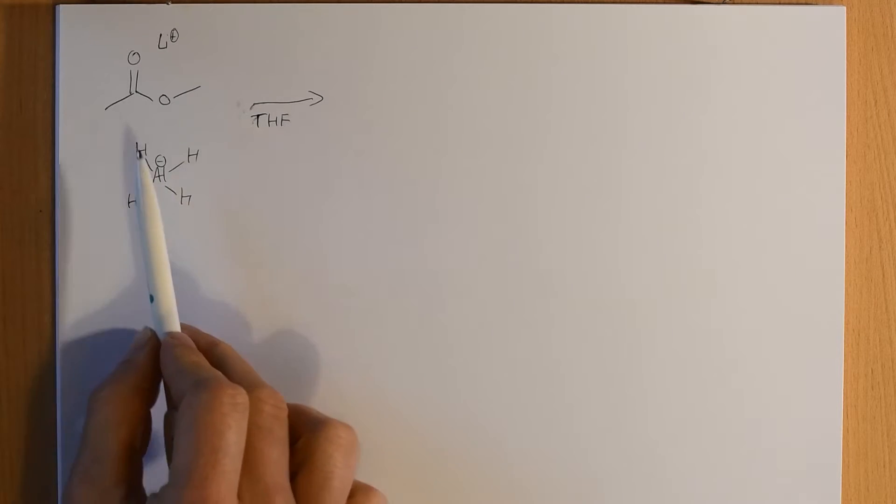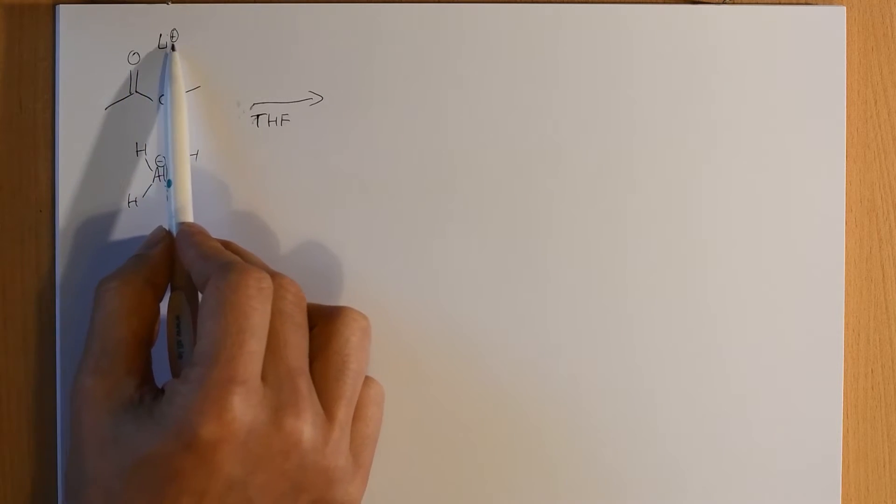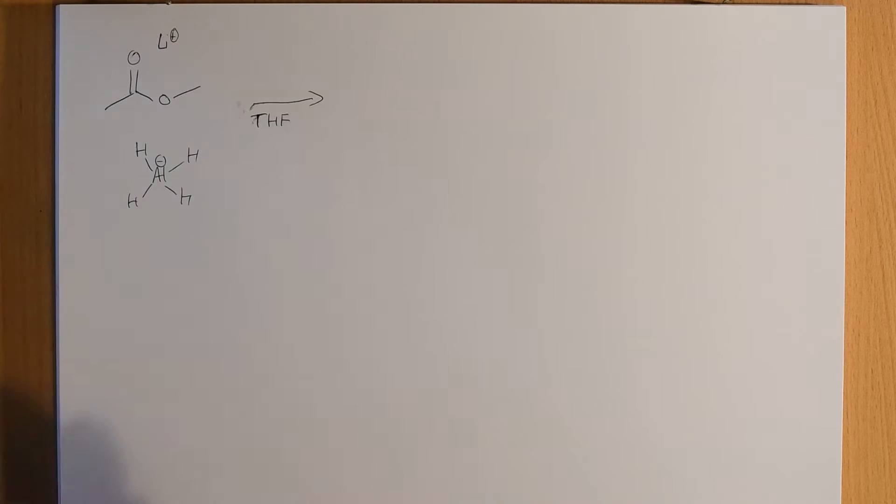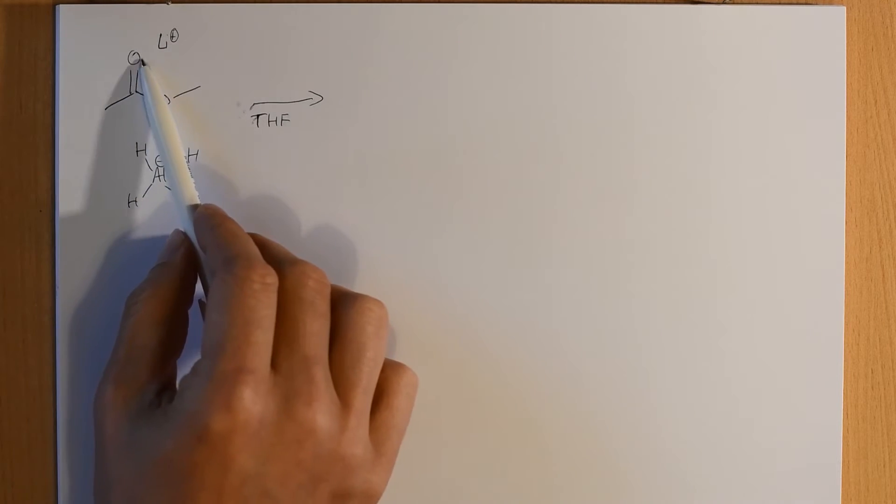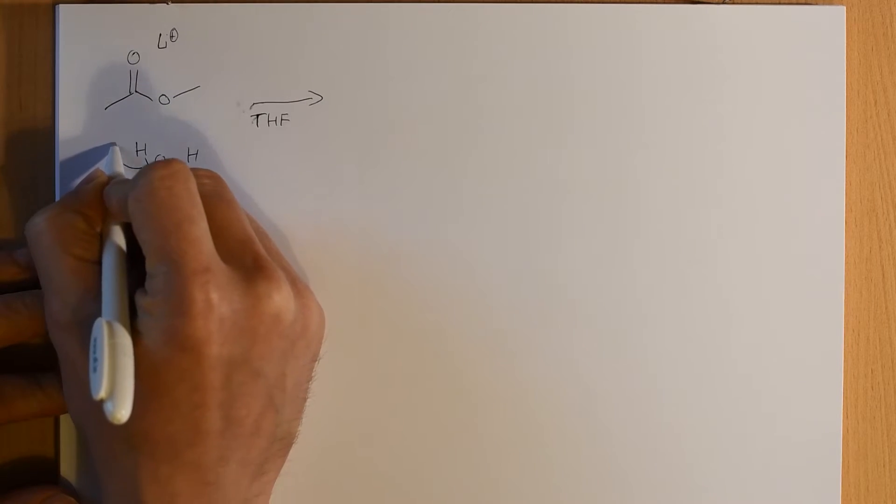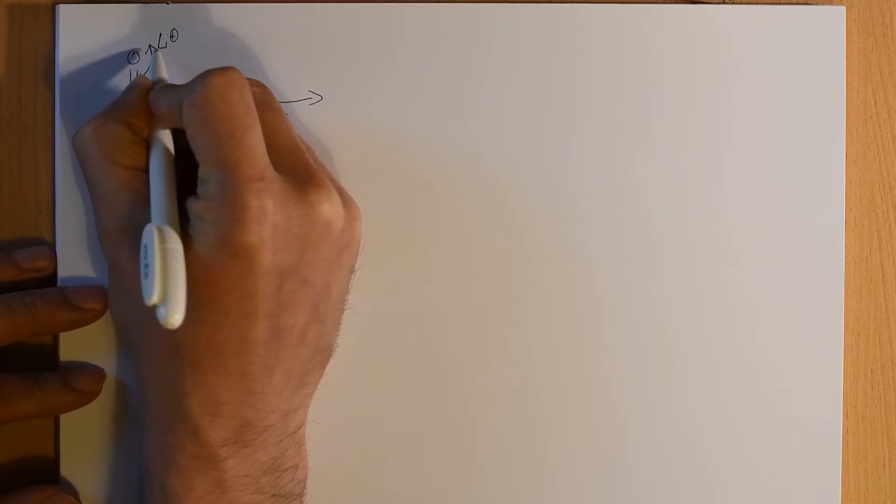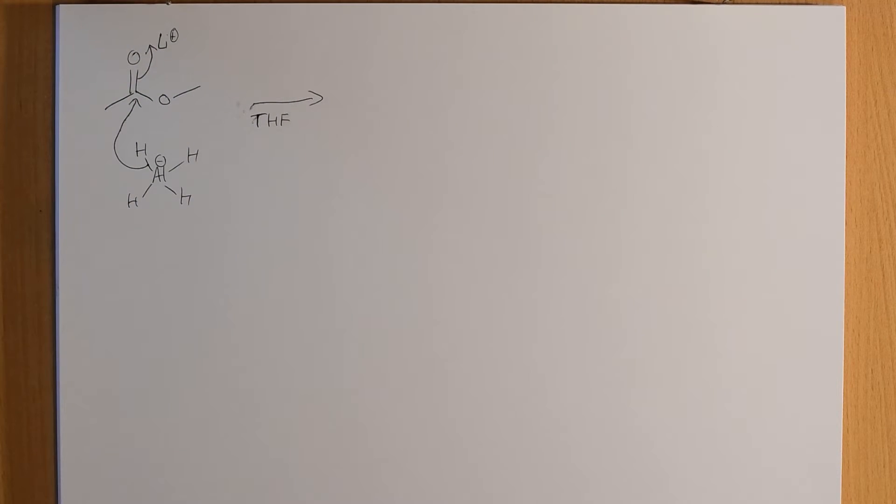And again, I'm going to draw these out in convenient positions that will make drawing the mechanism easier. But our hydride can again attack the carbonyl. And when we attack this carbonyl, it can coordinate to the lithium or it can form an ionic oxygen-lithium bond. So, this pair of electrons is going to form a new hydrogen-carbon bond. And this pair of electrons is going to form an ionic oxygen-lithium bond.